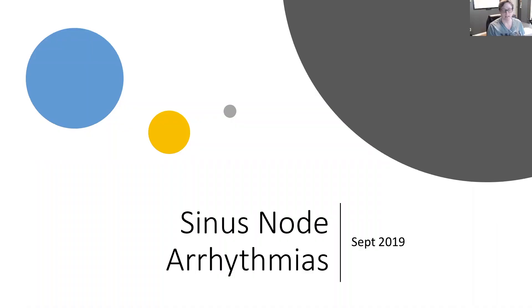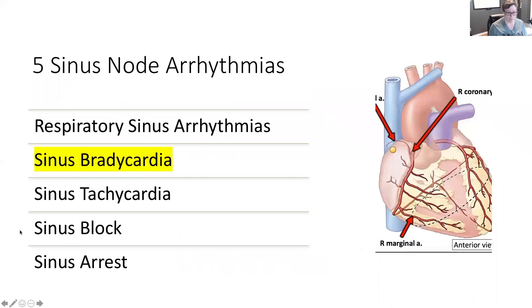In this section, we're going to be looking at sinus bradycardia. We're carrying on with our sinus node arrhythmias, and in particular, we are looking at sinus bradycardia — number two of the five.